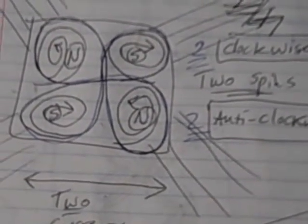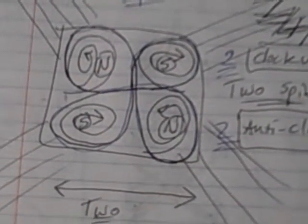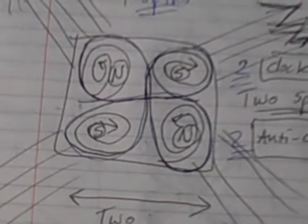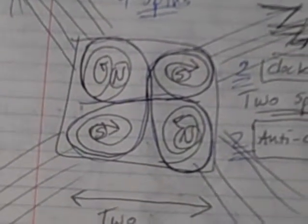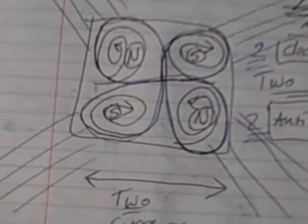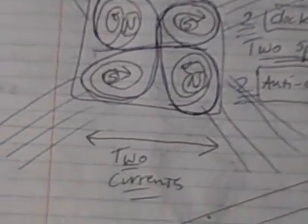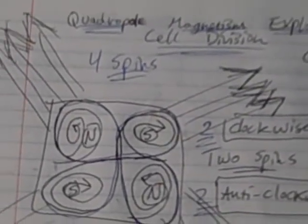One current that's a north-to-north flowing current, and then one current that is a south-to-south flowing current. It's arbitrary what you call north or south, but the two north spins in this case are anti-clockwise, and the two south spins are clockwise. And what's going on is, you also have this figure-eight cross pattern, which I've pointed out in other videos. So, you have four spins, two clockwise, two anti-clockwise, two currents, and that magnetism is quadrupole.